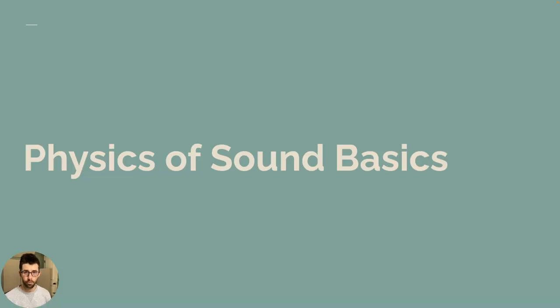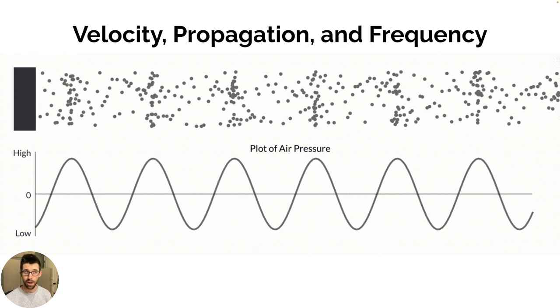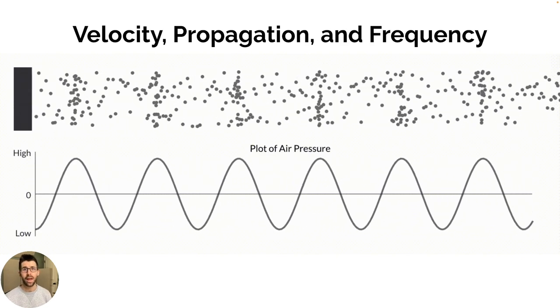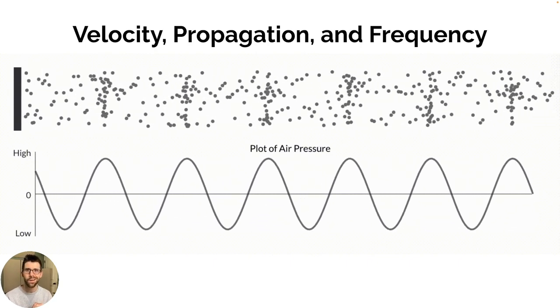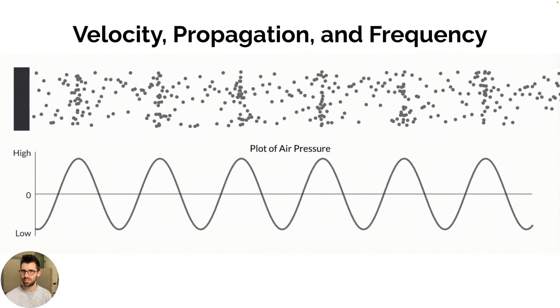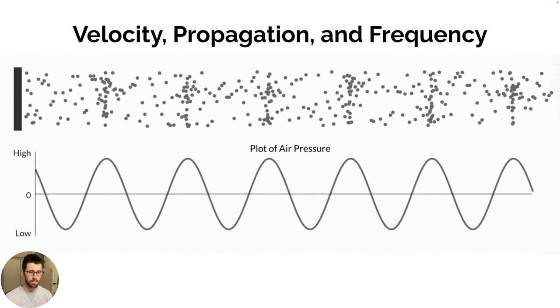Before we define what a comb filter is, we need to understand some underlying fundamentals of how sound actually works in nature, mainly three attributes. First is velocity, how fast is sound traveling. Propagation, how much distance is it covering at that given velocity. And frequency, how many times per second is it completing a cycle.